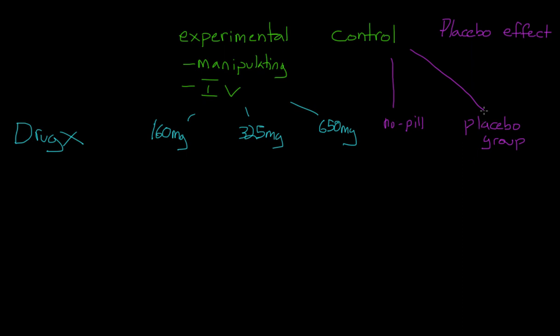So to review, we have five groups. We have three experimental groups with different levels of Drug X. We have two control groups, one group that doesn't receive any pills, and one group that receives placebos. And remember that ideally people have been randomly selected to be in one of these five groups, and they won't know which group they're in.